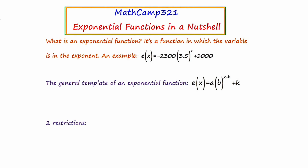An exponential function is a function in which the variable is in the position of the exponent. An example I've provided is f(x) = negative 2300 times 3.5 to the x plus 1000. What I'd like you to notice is the position of that variable — x is in the position of the exponent. That's what makes this an exponential function.